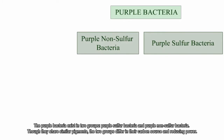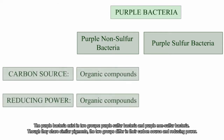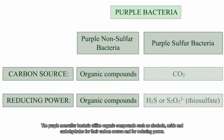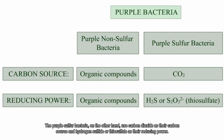The purple bacteria exist in two groups: purple sulfur bacteria and purple non-sulfur bacteria. Though they share similar pigments, the two groups differ in their carbon source and reducing power. The purple non-sulfur bacteria utilize organic compounds such as alcohols, acids, and carbohydrates for their carbon source and for reducing power. The purple sulfur bacteria, on the other hand, use carbon dioxide as their carbon source and hydrogen sulfide or thiosulfate as their reducing power.